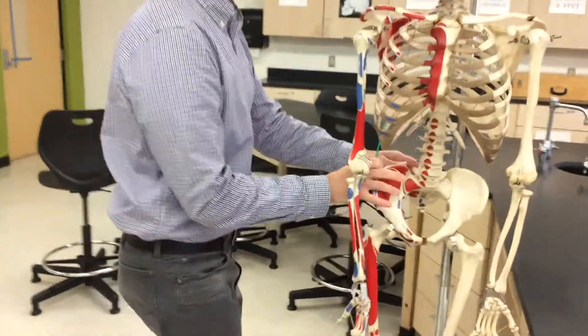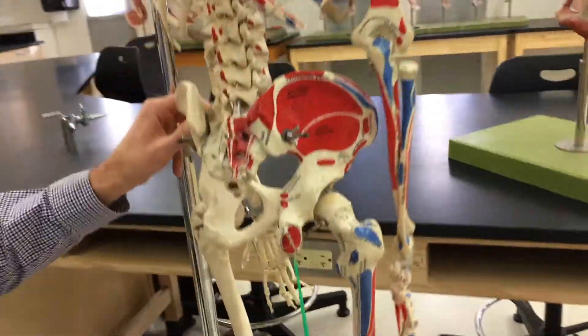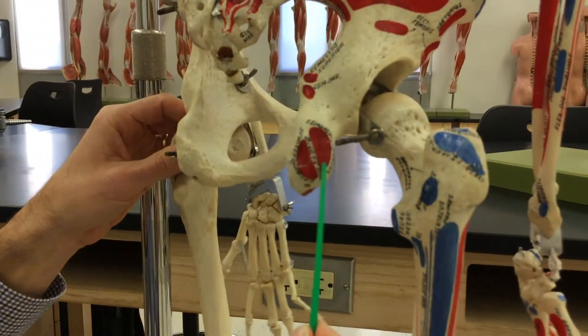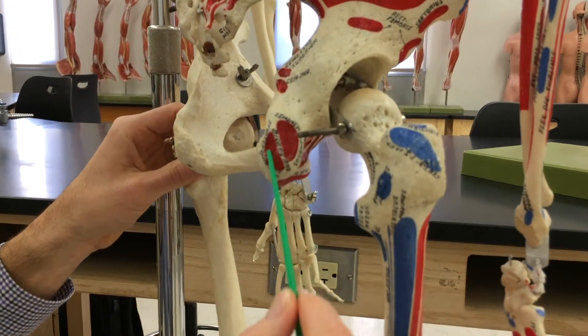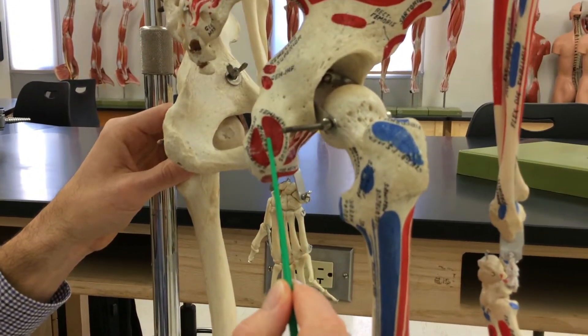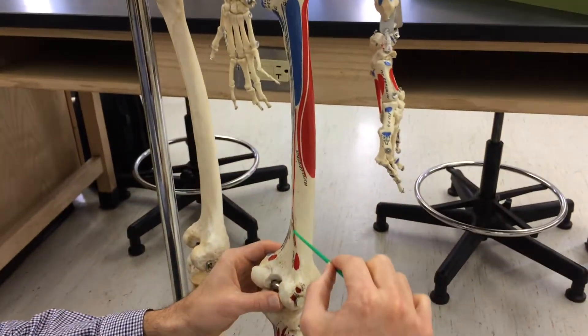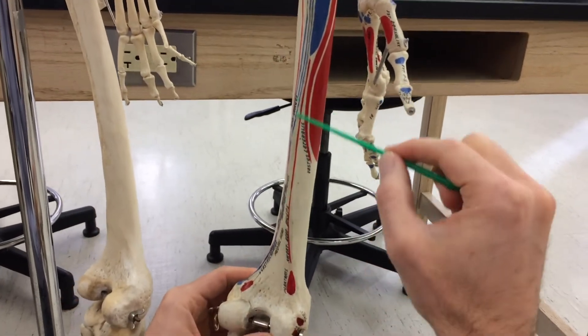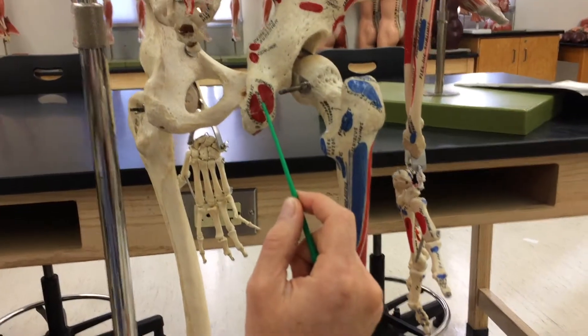So these hamstrings have their origin right here on the ischial tuberosity. This is what you sit down on when you're seated. All three of them have their origin here: biceps femoris, semitendinosus, semimembranosus. One more thing I want to point out, the short head of the biceps femoris right along this linea aspera. So here on the femur and here on your ischial tuberosity.